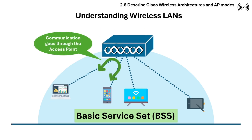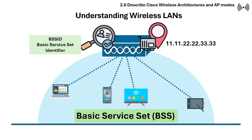Inside a BSS, all devices communicate through the access point, which ensures data is transmitted properly using the same frequency spectrum, modulation, channel, and so on. A BSS is identified by a unique BSSID, or basic service set identifier, which is typically the MAC address of the access point's radio interface.